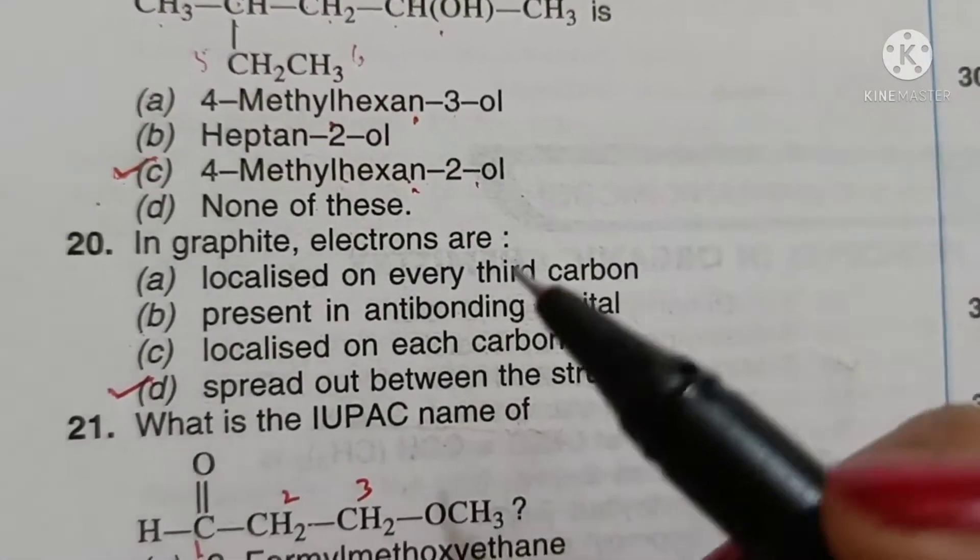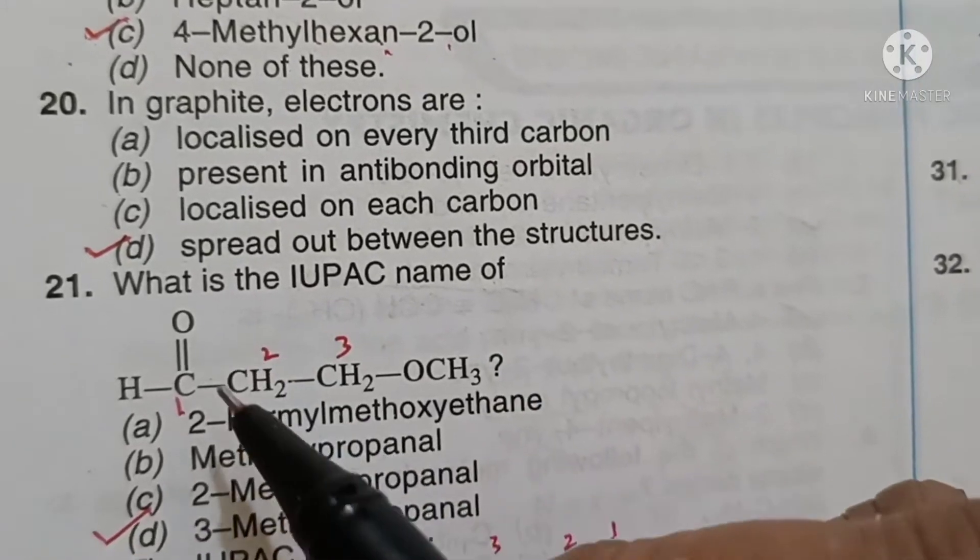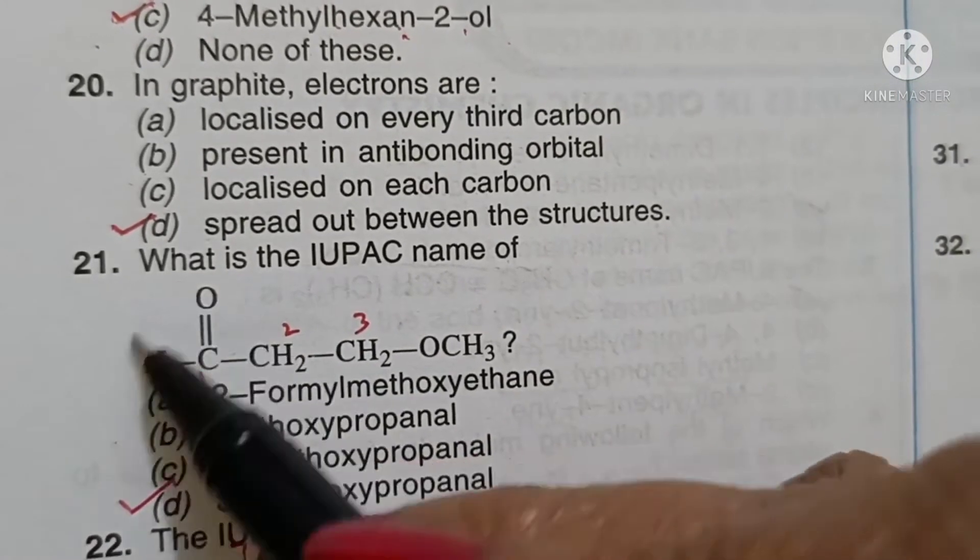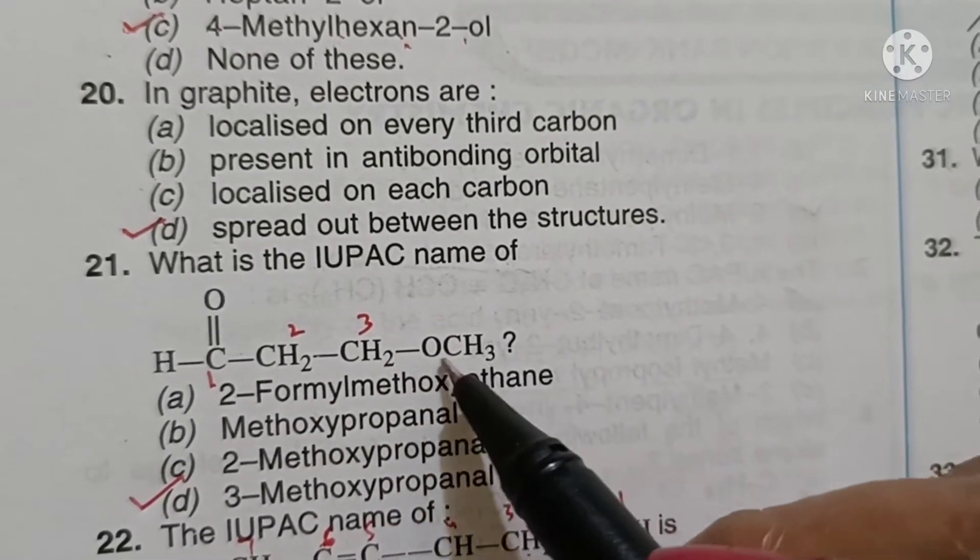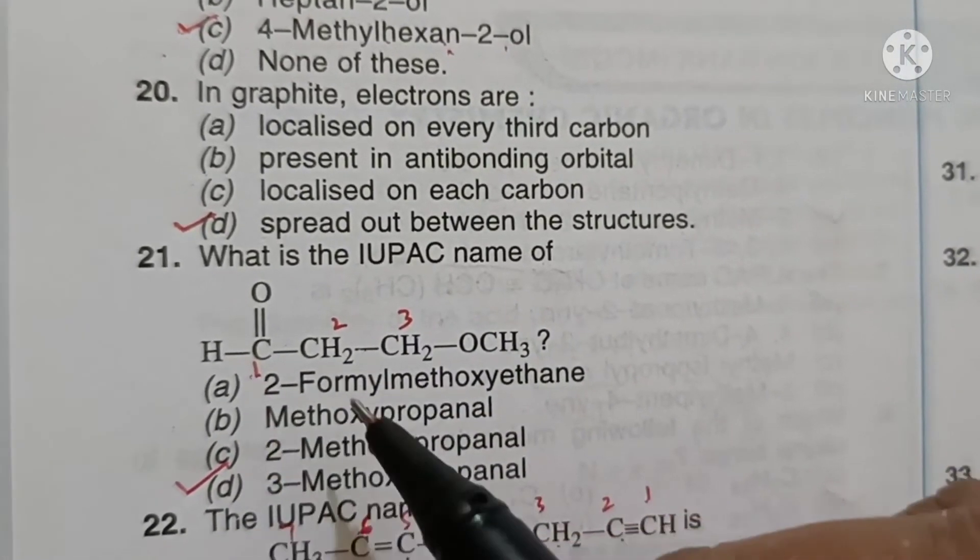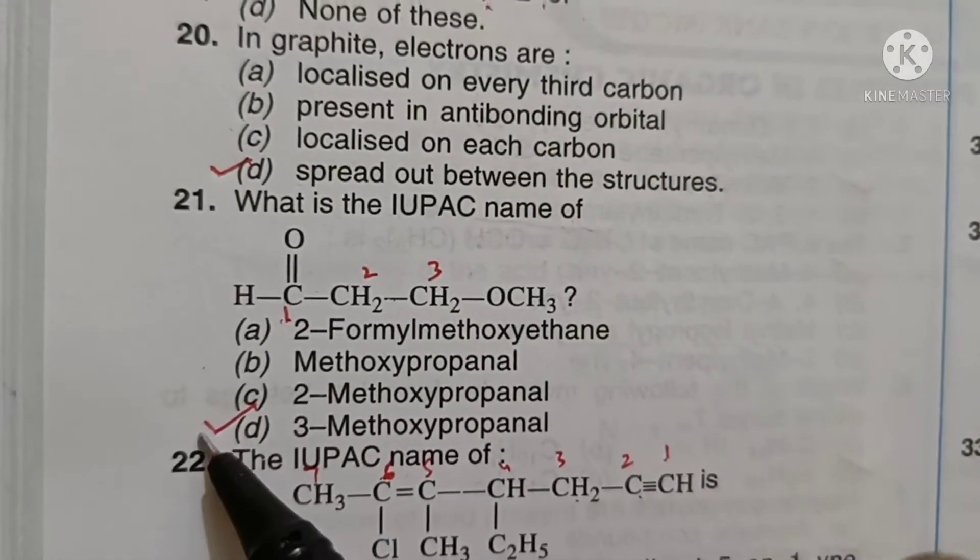In graphite, electrons are spread out between the structures. IUPAC name - this is aldehyde group, so numbering starts from here. At 3 we have a methoxy, so 3-methoxy-propanal, option D.